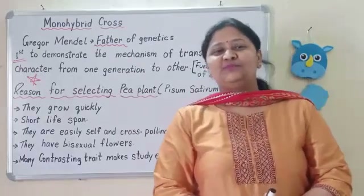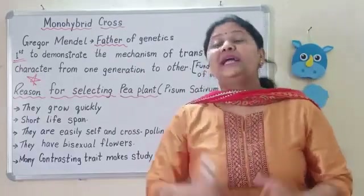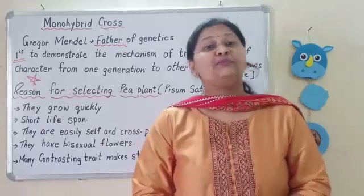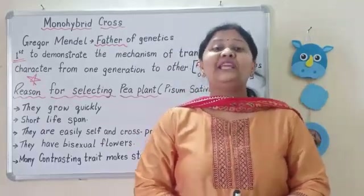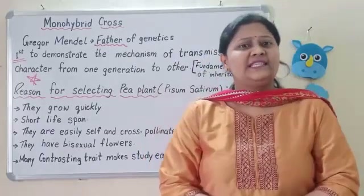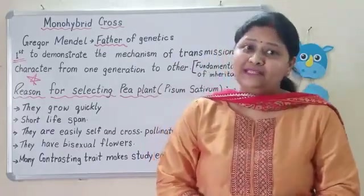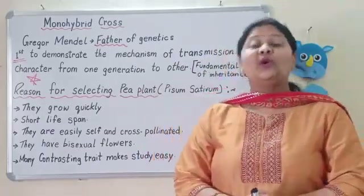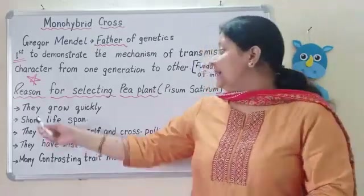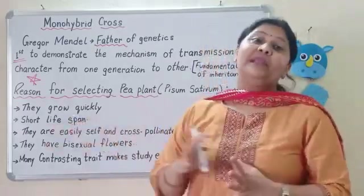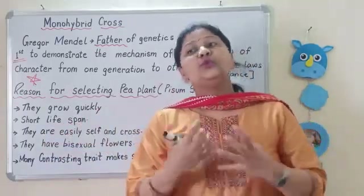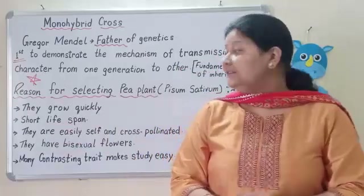One interesting thing you should know is that Gregor Mendel selected the pea plant. The scientific name of the pea plant is Pisum sativum. Why did he select the pea plant for his experiment? The first reason is short life span — the pea plant's life span is short, so one can make observations within a short time.